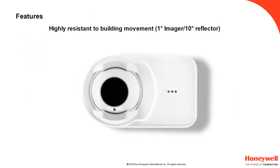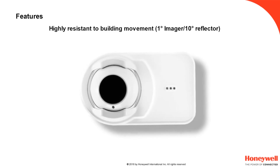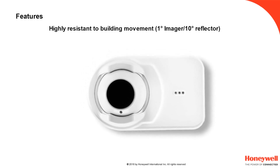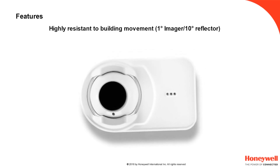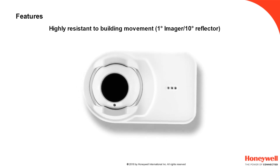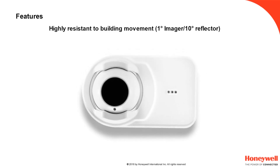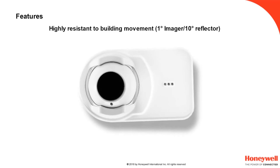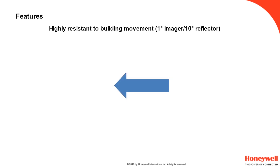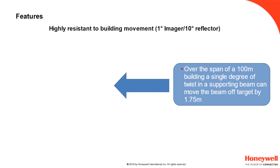The number one issue that beam detectors face is building movement, particularly thermal expansion, contraction and twist within metal-framed factories and warehouses that are a common site for beam detection. The OSID R can accept up to 1 degree of movement in all directions at the detector and 10 degrees at the reflector. As an example, at 330 feet or 100 metres, 1 degree of flex at the emitter or detector results in a shift of 5¾ feet or 1.75 metres about its centre.